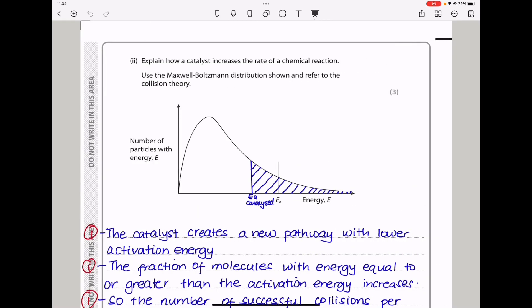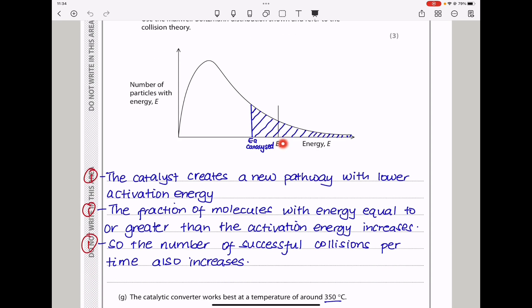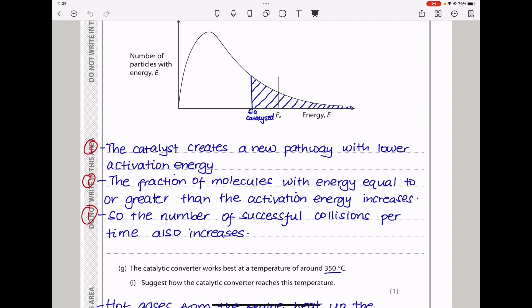Moving on. Here they say explain how a catalyst increases the rate of a chemical reaction. They wanted to use the Maxwell-Boltzmann distribution shown and refer to the collision theory. The uncatalyzed reaction has a higher activation energy than the catalyzed reaction. So I drew the activation energy lower. And as we can see, the area under the curve corresponds to the number of particles with energy. So with the uncatalyzed reaction, we see there are fewer particles because the area under the curve will be smaller. But with the catalyzed reaction, we see there is going to be more particles because the area under the curve is going to be more. So I said the catalyst creates a new pathway with lower activation energy. And the fraction of molecules with energy equal to or greater than the activation energy increases. So the number of successful collisions per time also increases. And that means there is going to be a higher rate. And again, successful collisions per time corresponds to rate.